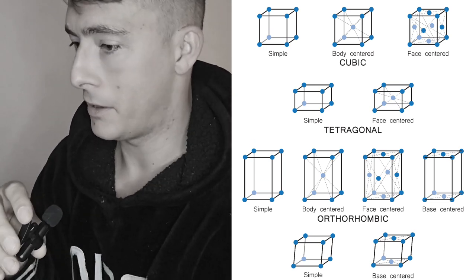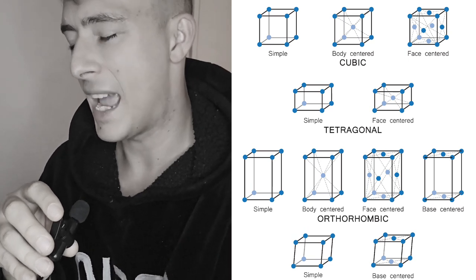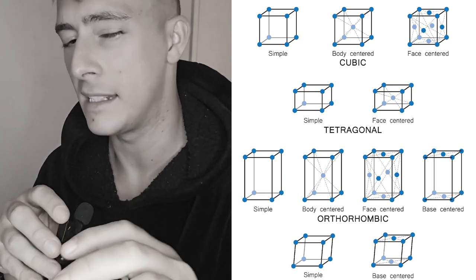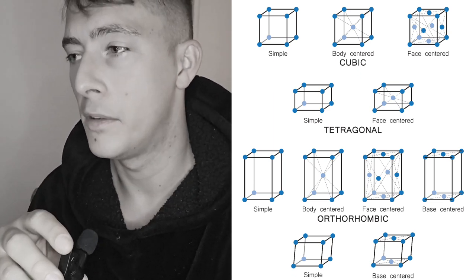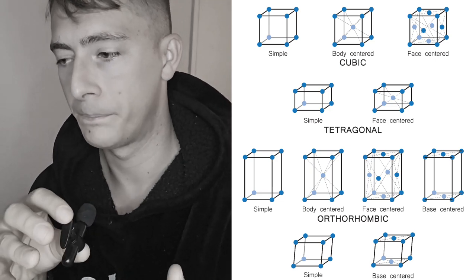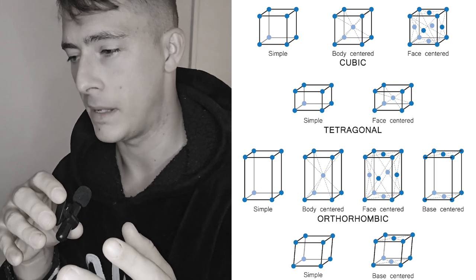The lattice is essentially the mathematical framework of a crystal. The atoms as they appear in a repeatable pattern within space. Now this lattice, the symmetrical geometric shape of this lattice is going to be a system.